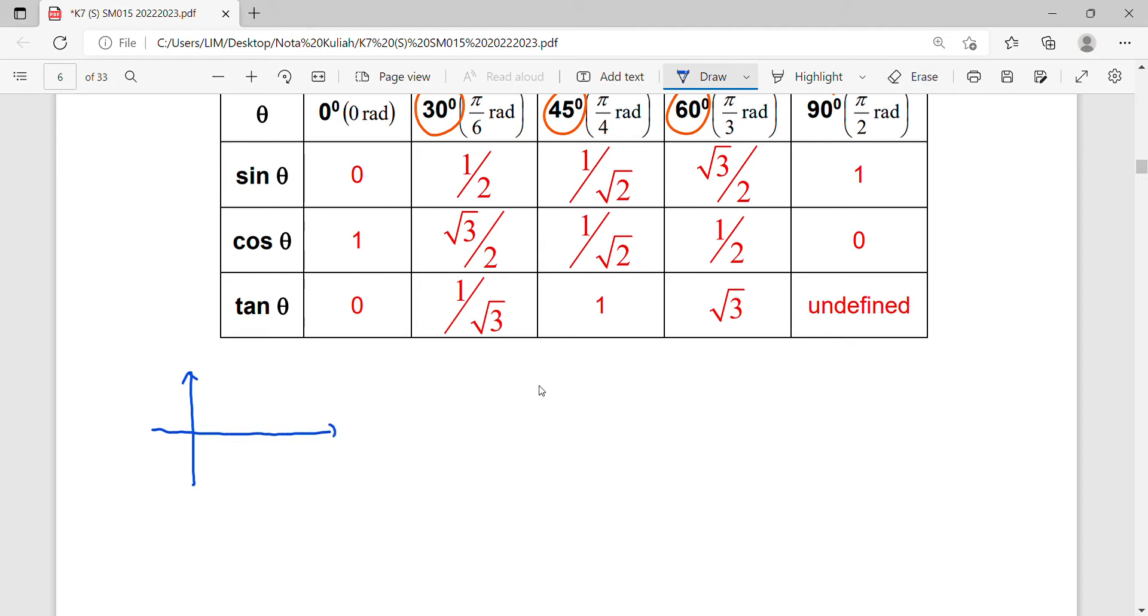When you have a sine graph, it starts with zero, goes up to one, then comes back to negative one, and ends with zero. Here is 360, one complete period. The length here is 180, and here is zero. The maximum value occurs at 90 degrees, minimum value at 270 degrees.